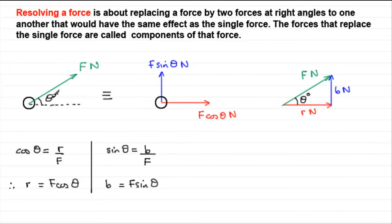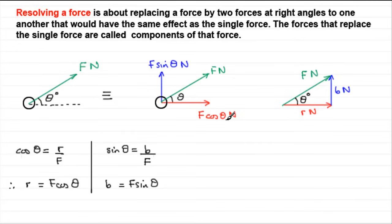So our single force F, acting at angle theta, can be represented by these two components. Drawing F back in at angle theta: the component that contains the angle is always the cosine — F cos θ — and the component that excludes the angle is always F sin θ. If you can remember this, it makes working out the components of a force at a certain angle very easy.